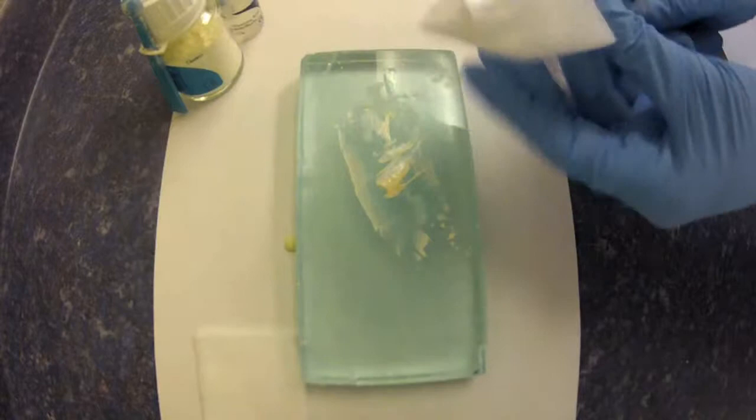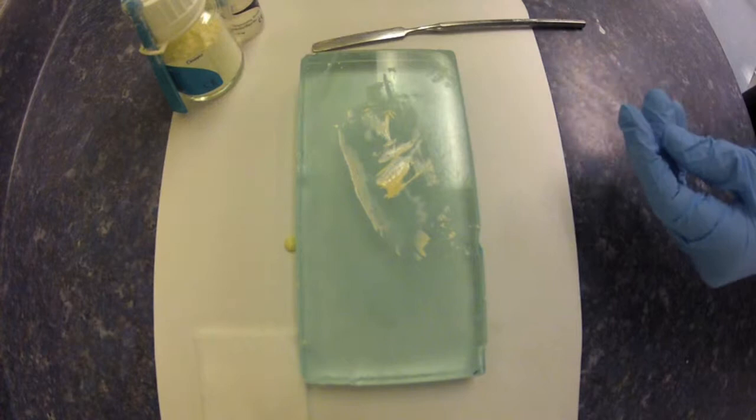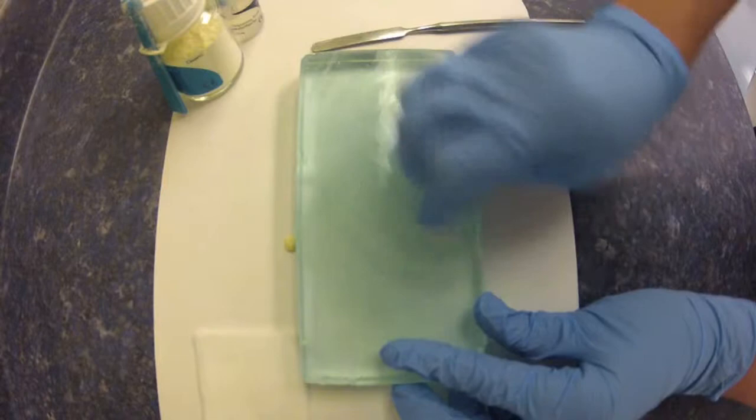And again, polycarboxylate is very sticky, so always remember to clean your instruments and glass slab immediately. A little bit of water helps with that removal.